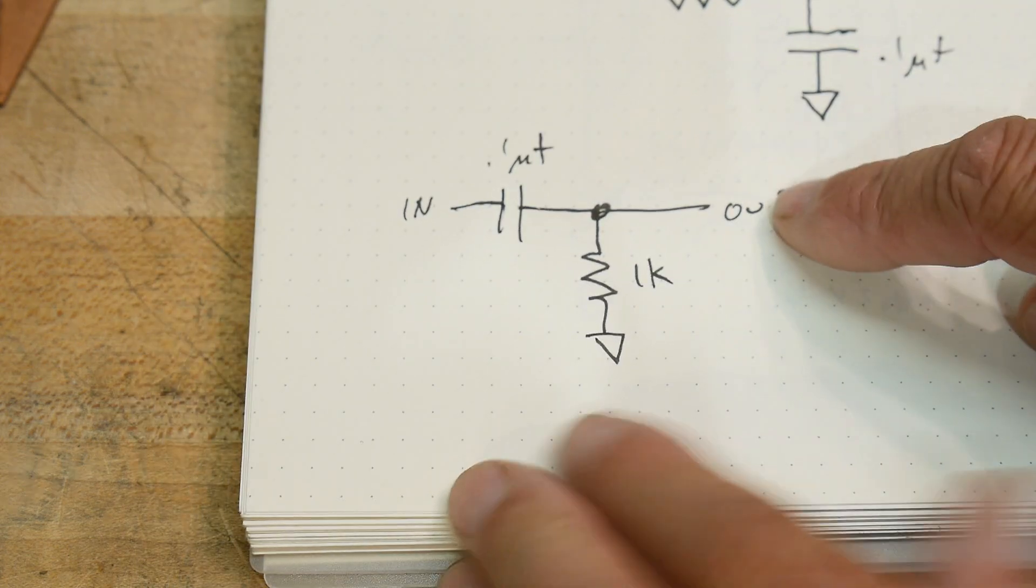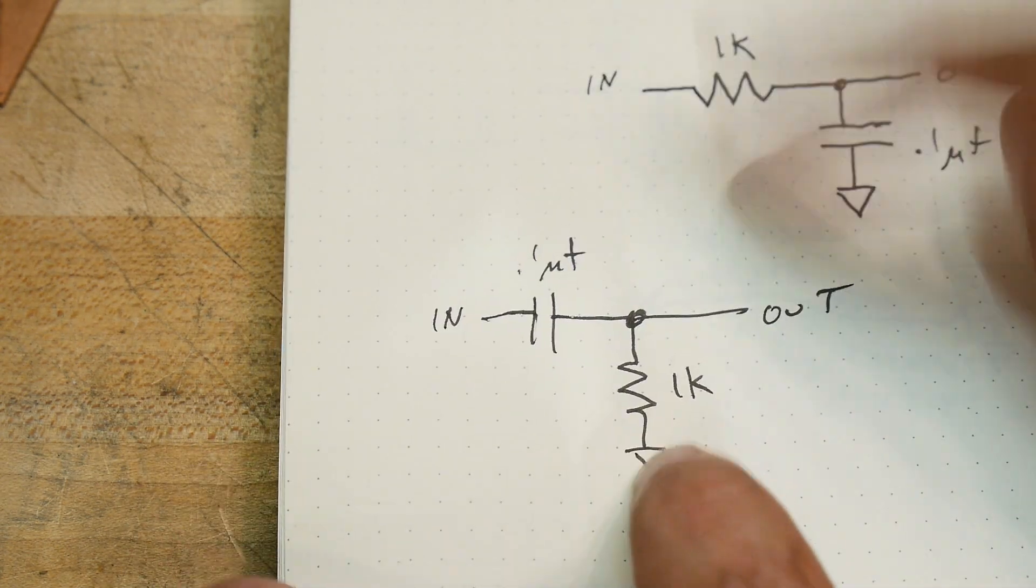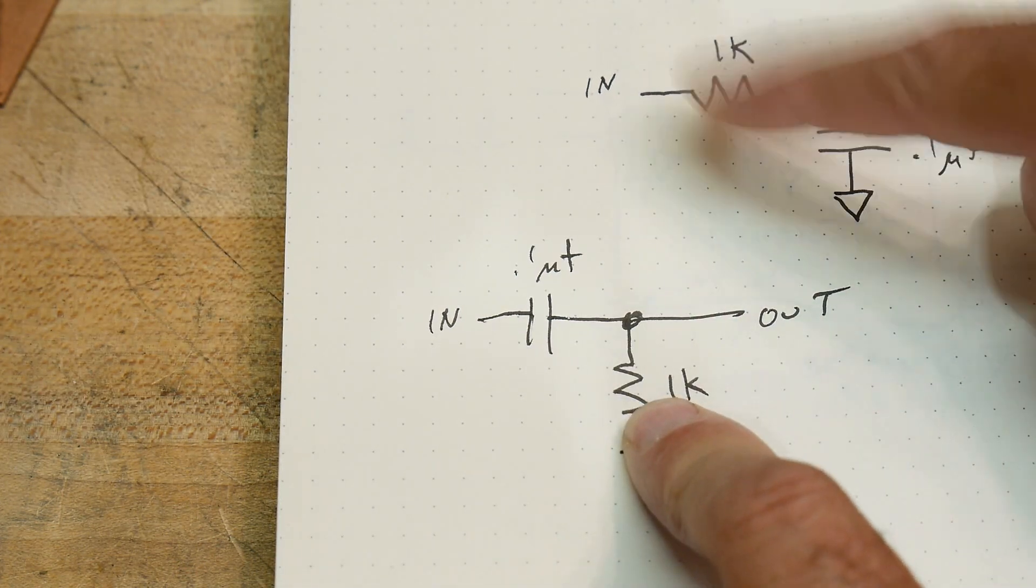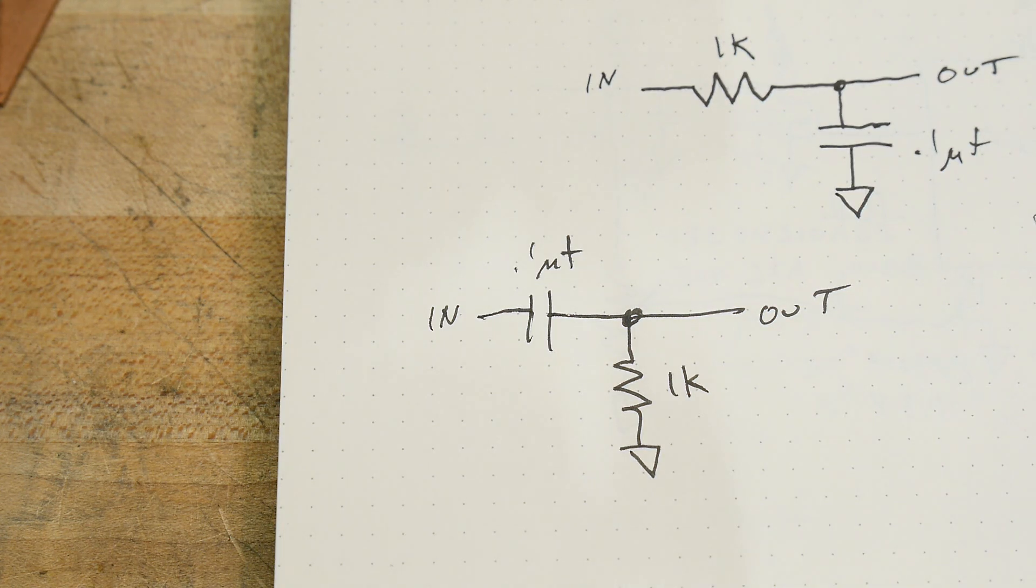Okay, we did a low-pass filter. Let's do a high-pass filter. We've just swapped the locations of these two components. Put the capacitor here to there, and the resistor from there to there. And this should be a high-pass filter. So let's do a Bode plot.